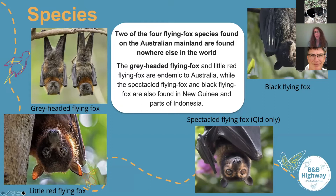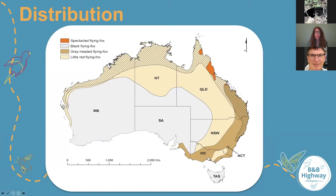Looking at a map of where those two endemic Australian species are found, you might be able to relate to wherever you are watching from — now you'll know what you're looking at when you look up at the night sky. You might be lucky enough to be in one of those areas that has a few different types of flying foxes. It's worth looking at the distribution, the spread of those different species across various parts of Australia. Maybe it's worth investigating why they're not found in certain parts, like down in Tasmania.